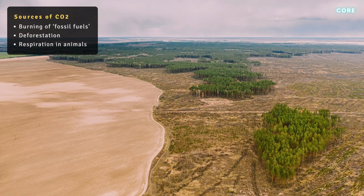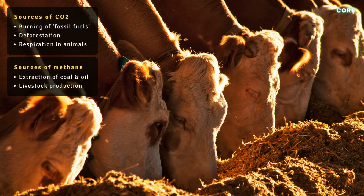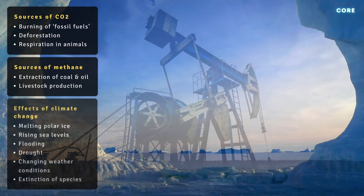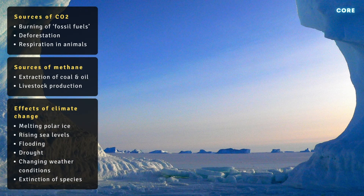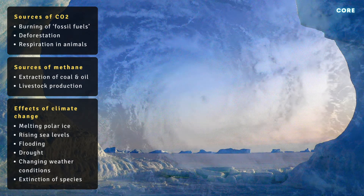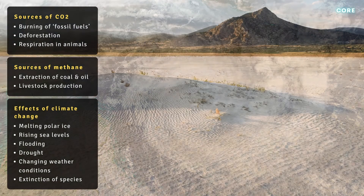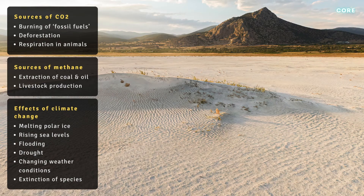oil, and natural gas, and deforestation, since trees photosynthesise, removing carbon from the atmosphere. Methane is produced in the stomachs of animals, including cattle, and released during the extraction of coal and oil. Theoretically, a significant rise in temperatures could melt polar ice, leading to a rise in sea levels and the flooding of low-lying land. It may also contribute to extreme or changing weather conditions, and the extinction of species that are unable to adapt to the changing climate.